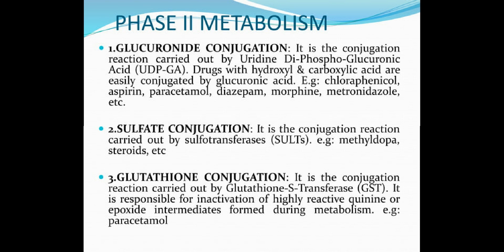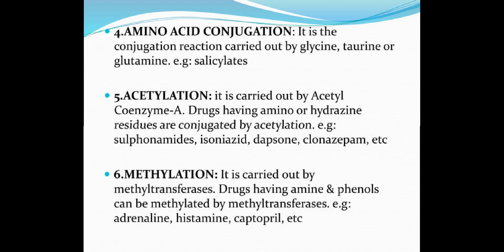Third, glutathione conjugation — it is the conjugation reaction carried out by glutathione S-transferase (GST). It is responsible for inactivation of highly reactive quinone or epoxide intermediates formed during metabolism, for example paracetamol. Fourth, amino acid conjugation — it is the conjugation reaction carried out by glycine, taurine, or glutamine, for example salicylates.